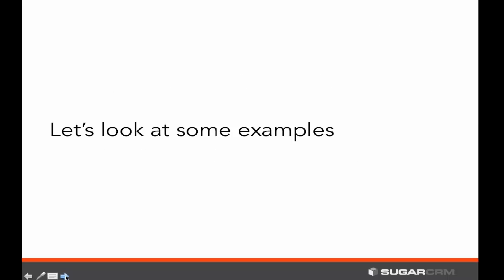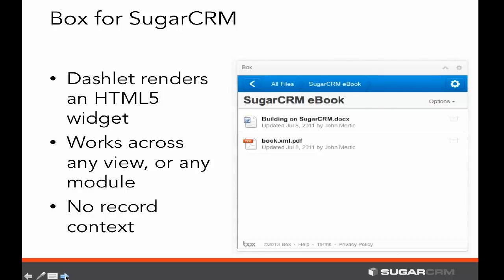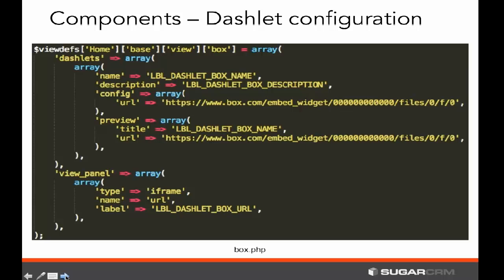Let's look at a few examples of iframe dashlets. The first one is our Box for SugarCRM dashlet, and this is a really simple dashlet. We've had a Box integration for a number of releases in the Sugar 6 cycle. The guts of this are an HTML5 widget that Box provides, which we render in the form of a dashlet — an HTML5 widget exposed into an iframe. This dashlet won't have any sorts of context, so it can work at any view or any module with ease.